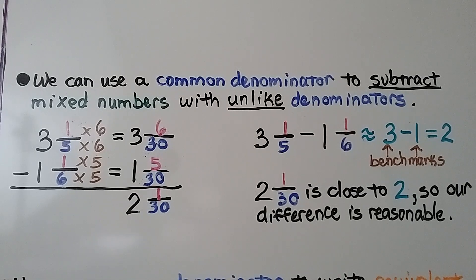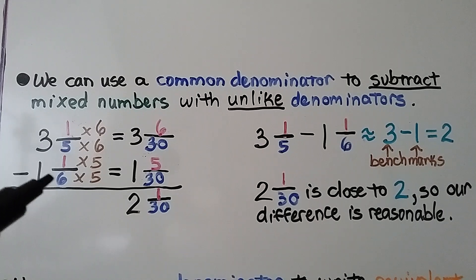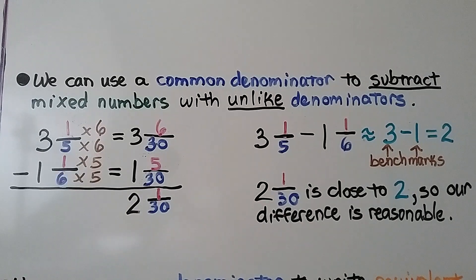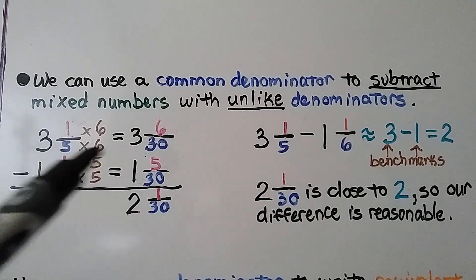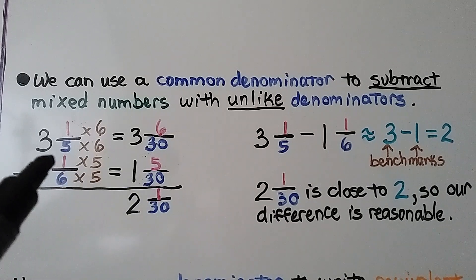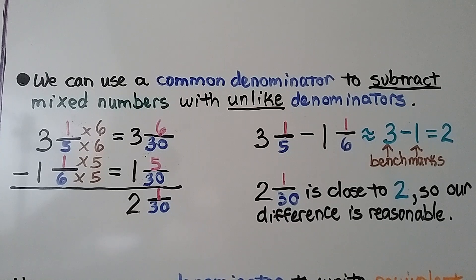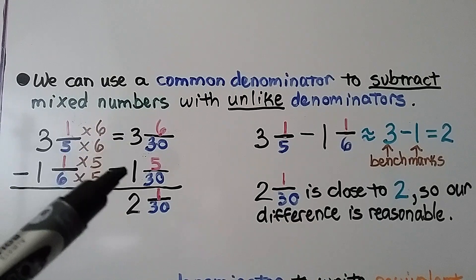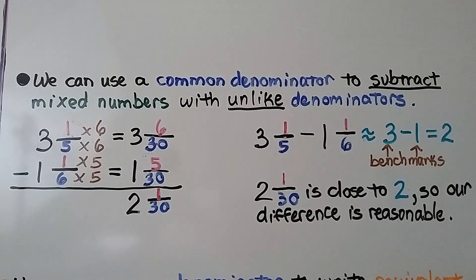We can use a common denominator to subtract mixed numbers with unlike denominators. We have 3 and 1 fifth minus 1 and 1 sixth. 5 times 6 is 30, so we use 30 as the common denominator. 5 times 6 is 30, so we multiply the numerator times 6 — we have 3 and 6 thirtieths. 6 times 5 is 30, so we multiply 1 times 5 — we have 1 and 5 thirtieths. We subtract the numerators: 6 minus 5 is 1. We use the denominator 30, then subtract the whole numbers: 3 minus 1 is 2. We have 2 and 1 thirtieth.